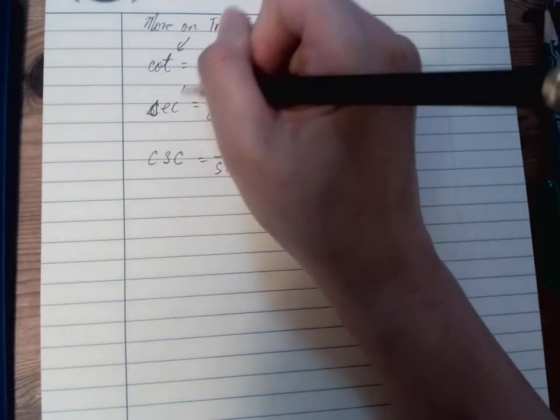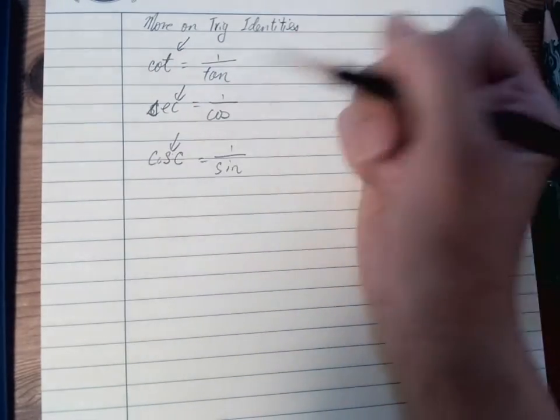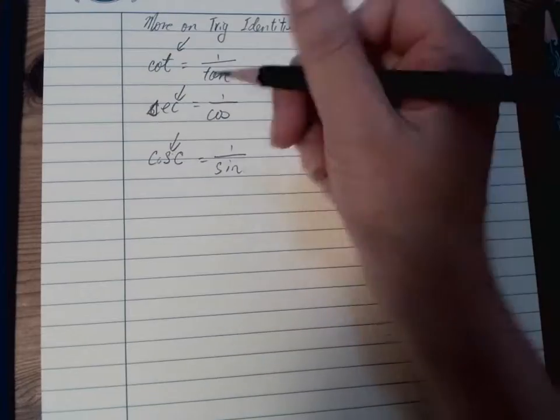And cosecant equals to 1 over sin. Usually we use the third letter to represent it, but cosecant is not the third letter, it's the middle one, because it's a short form of cosecant.